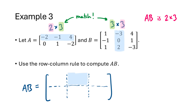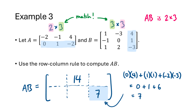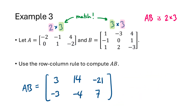For example, the row 1, column 2 entry of AB: we take row 1 of A and column 2 of B, multiply corresponding entries (-2 times -3, plus the second pair, plus the third pair), and sum them to get 14. The row 2, column 3 entry gives us 7. Continuing this way we fill in all entries of AB. This is especially useful when we only need one or a few specific entries of the product.